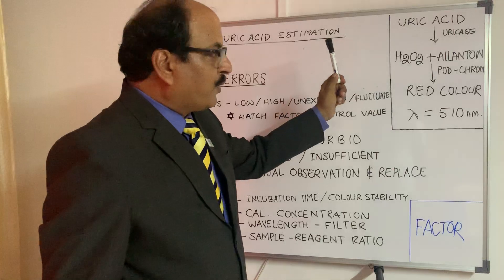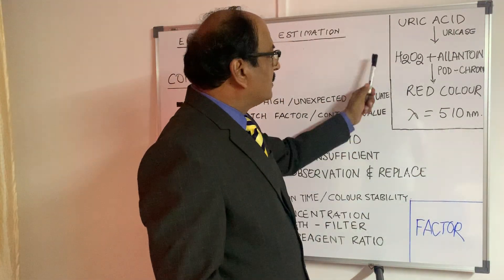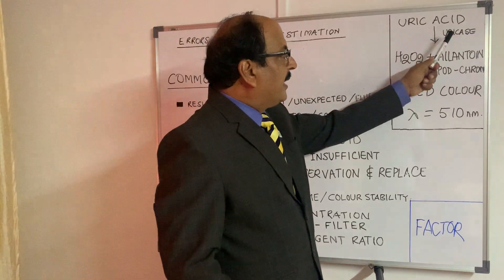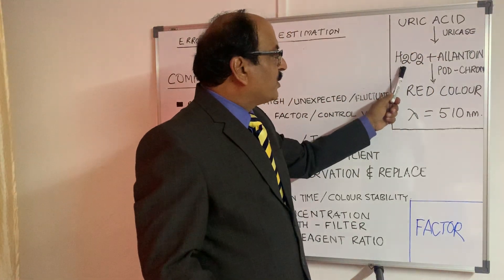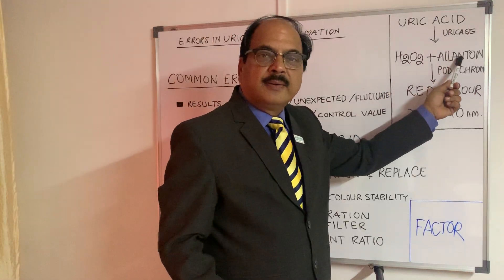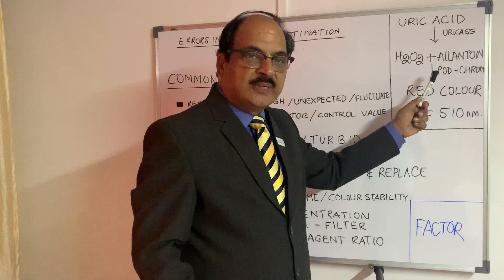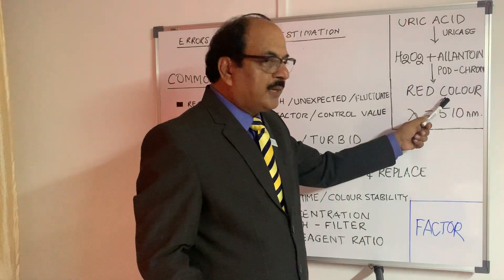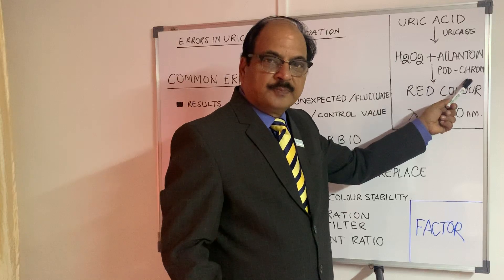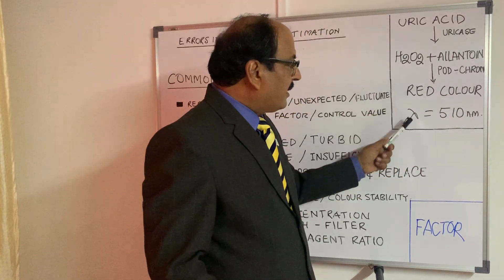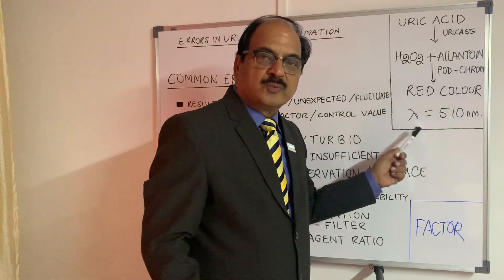Uric acid — before we go into the errors, let's see how uric acid really works. Uric acid in the presence of the uricase enzyme gets converted into hydrogen peroxide and allantoin. Our interest is in the hydrogen peroxide, which gets converted into a red color using a peroxidase and chromogen system. This red color at 510 nanometers is the wavelength of choice.